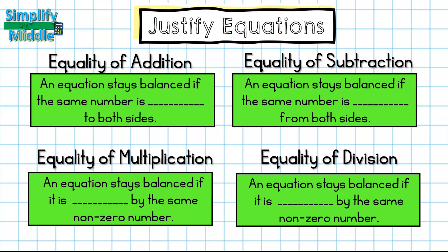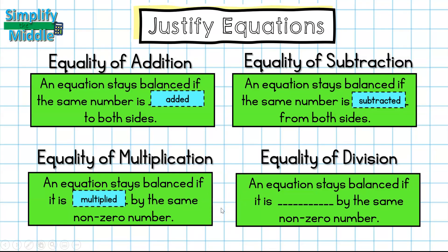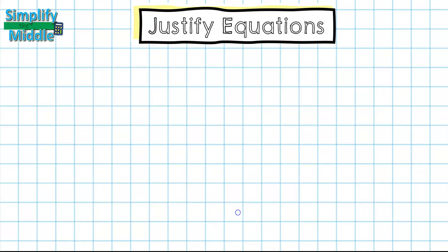Let's recap our properties. For the equality property of addition, an equation stays balanced if the same number is added to both sides. For subtraction, it stays balanced if the same number is subtracted from both sides. For multiplication, it stays balanced if both sides are multiplied by the same nonzero number. For division, it stays balanced if both sides are divided by the same nonzero number.